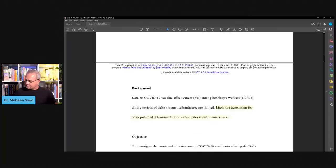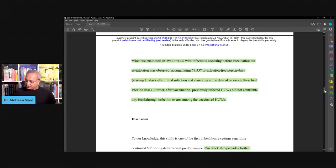Then if I go to their discussion near the end of it, you would see once again, check this out. Now, when we examined healthcare workers, number 423, with infections occurring before vaccination, before. So this is the folks who had the infection before the vaccination was done. No reinfection was observed. Accumulating 74,557 reinfection-free person-days, starting 10 days after initial infection and censoring at the date of receiving the first vaccine dose. So that is where they would stop, and now they would consider them to be vaccinated. Further, after vaccination, previously infected healthcare workers did not contribute any breakthrough infection events among the vaccinated healthcare workers.